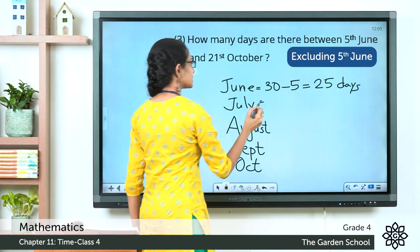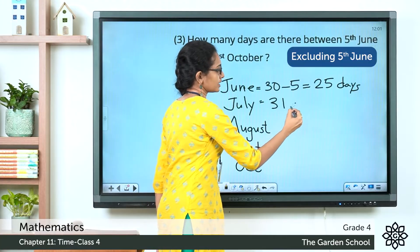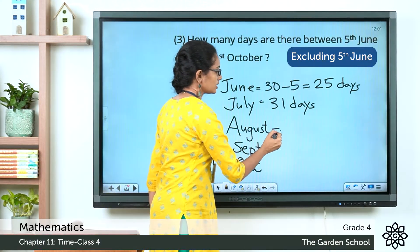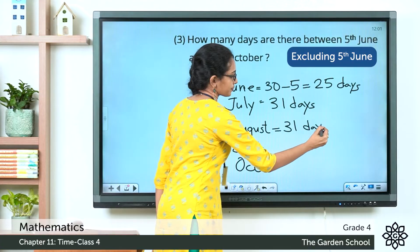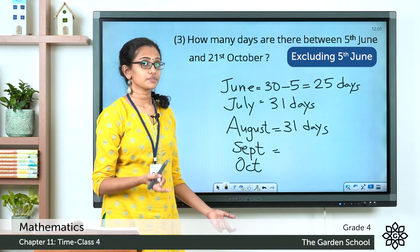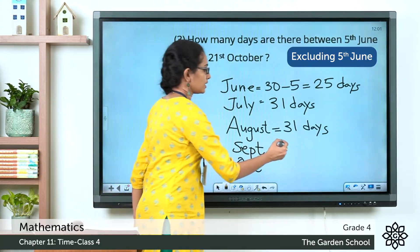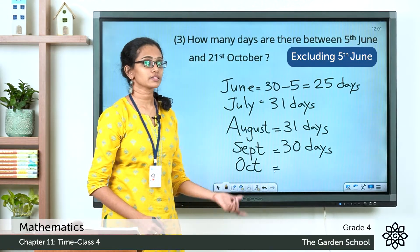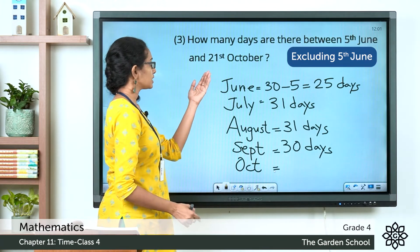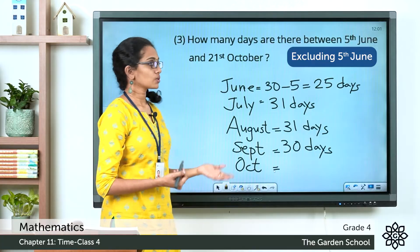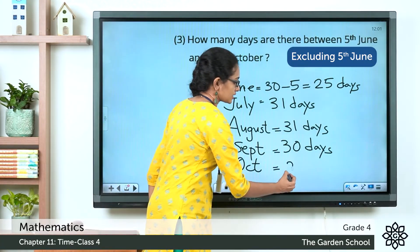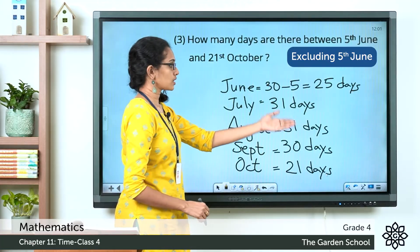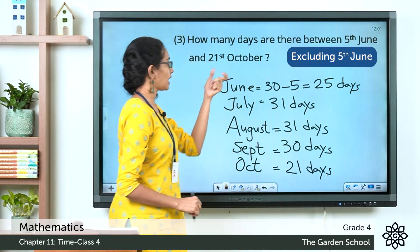July has a total of 31 days, and August also has 31 days. September has 30 days. October has a total of 31 days, but here we only consider up to the 21st of October, so that is 21 days. Now how do we find the total number of days between 5th June and 21st October?